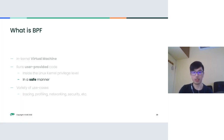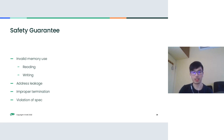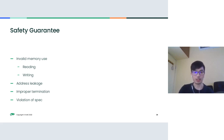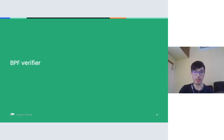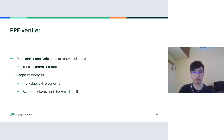With that background, we can talk more about safety. What does safety mean when we say user code can be run safely? In the Linux kernel context, safety roughly means four things: it should not have invalid memory use (either read or write); it shouldn't have any address leakage, which can cause security issues; the program should terminate; and it should not violate any spec. All of these are guaranteed by the BPF verifier, which runs static analysis on user-provided code and tries to prove the program is safe. If it's safe, it can run; if not, it will be rejected.